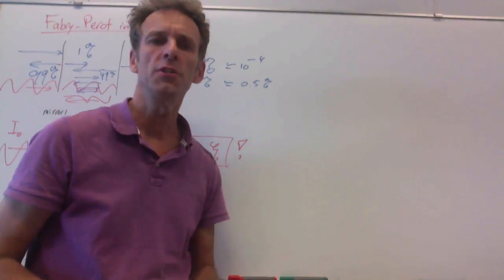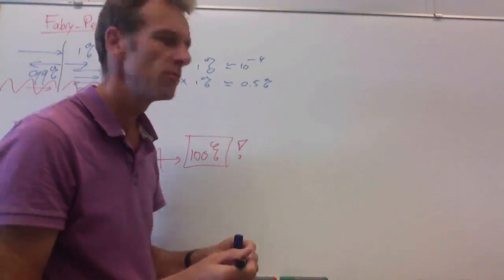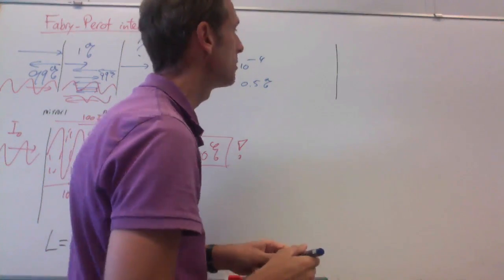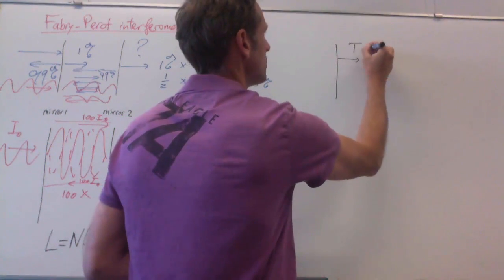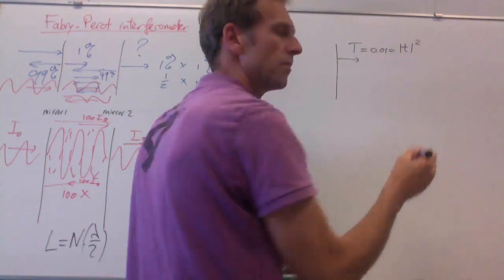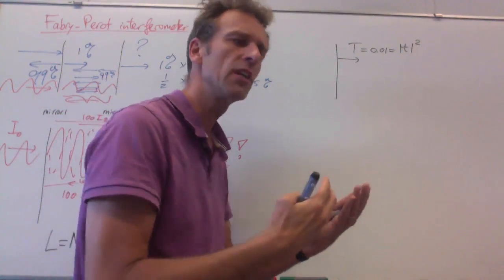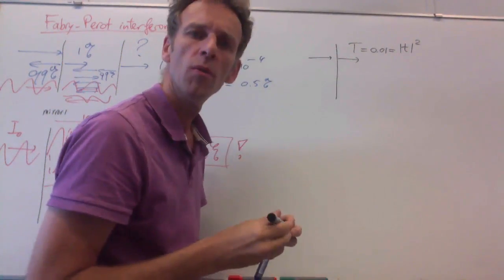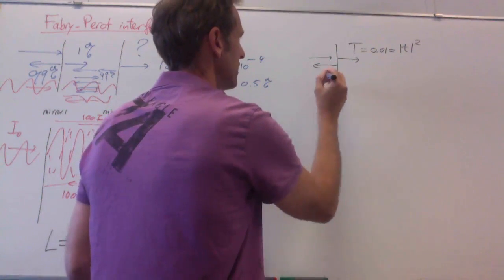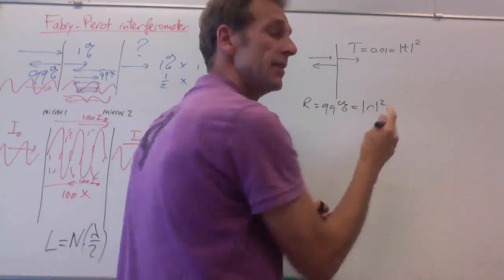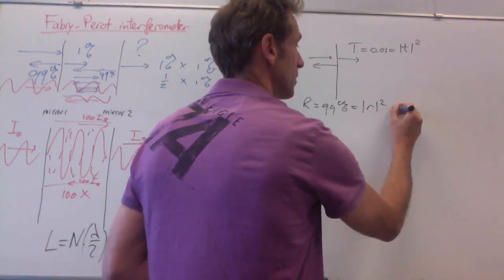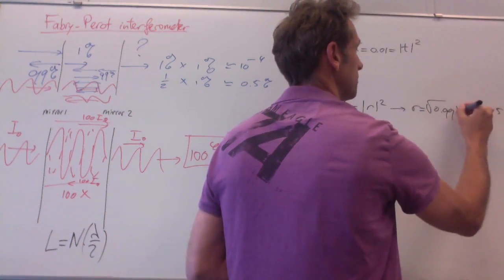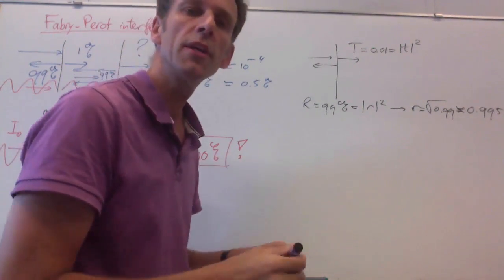So how can we show this magic of interference mathematically? For that, we'll first consider one mirror with 1% transmission, 99% reflection, and write the transmission, this 1%, as an amplitude. We're dealing with wave interference, so we have to think in terms of amplitudes of waves that add up. So, transmission intensity 1% means reflection 99%, and the amplitude of reflection is the square root of 99, which is 0.995 approximately.